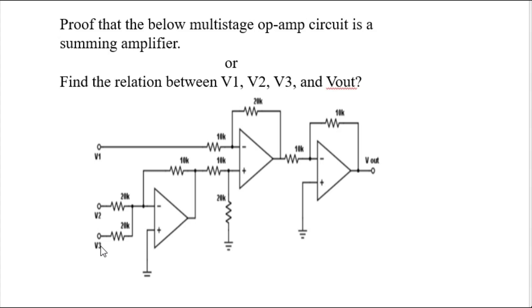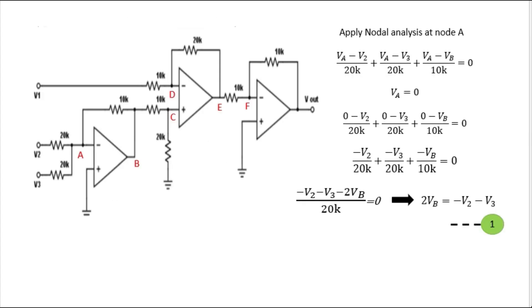The proportionality constant depends on how many times the amplifier amplifies — whether two times or three times or four times. Sometimes the question is asked as: find the relation between V1, V2, V3 and V-out. So this is the variation in the question. Before starting, please like and subscribe my channel. So let's start.